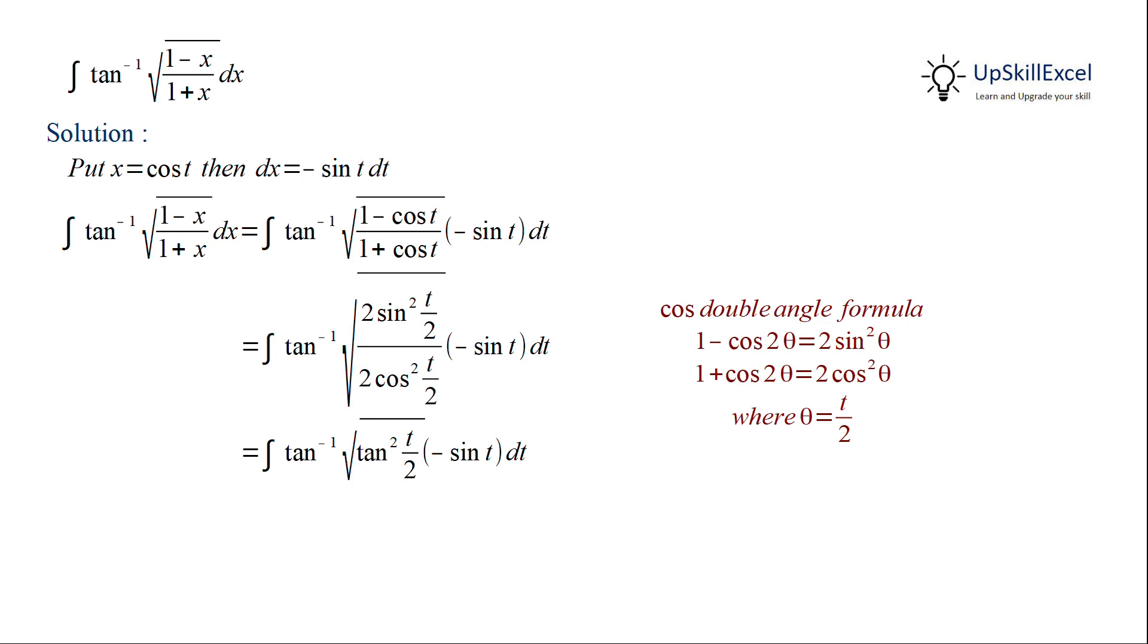The under root and square get cancelled out and then tan inverse and tan get cancelled out, giving us t over 2 multiply by minus sin t.